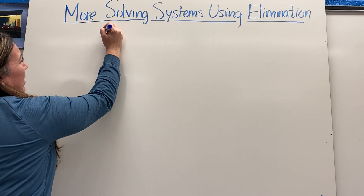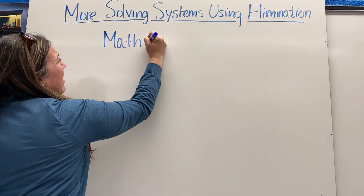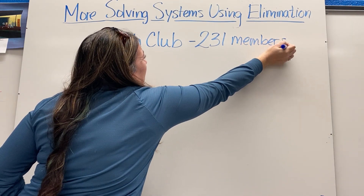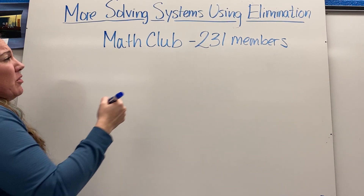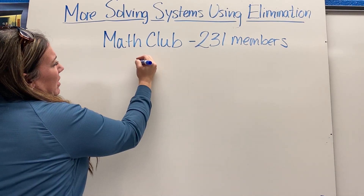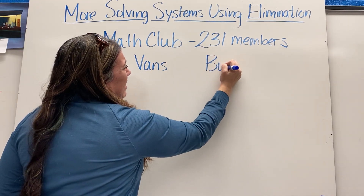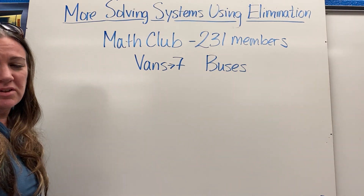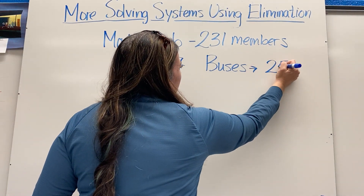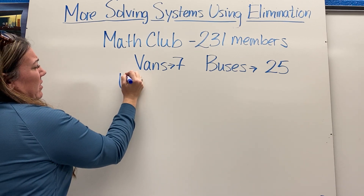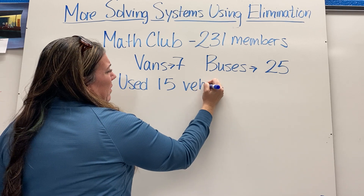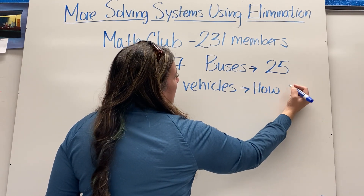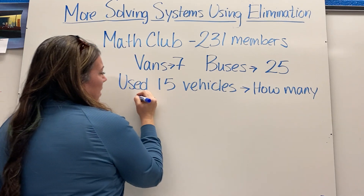Here's the situation: we are taking a math club trip. There are 231 members. As a school, we're going to take vans and buses. Vans hold 7 people and buses hold 25 people. We used 15 vehicles total. The question is: how many of each type of vehicle were used?